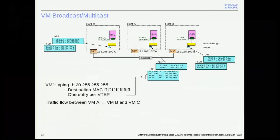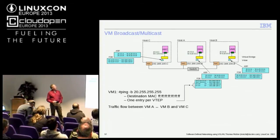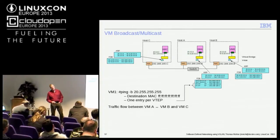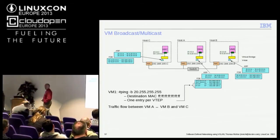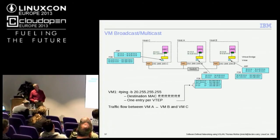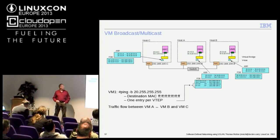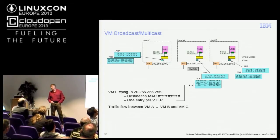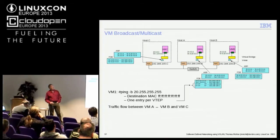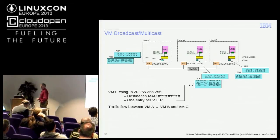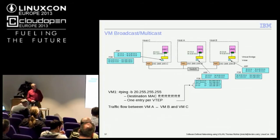VXLAN supports broadcast and multicast as well. Assuming we're on host A wanting to talk to VM-B and VM-C simultaneously, the entries are the same — but this time we have to talk from host A to host B and host C simultaneously. If you do a broadcast ping, the destination MAC address will be all Fs. What we need is a mapping in the forwarding database: if I talk to destination MAC address all Fs, I must send packets to several destinations, which are the participants in my network. By some kind of magic, somebody will add those entries for me when virtual machines are created.